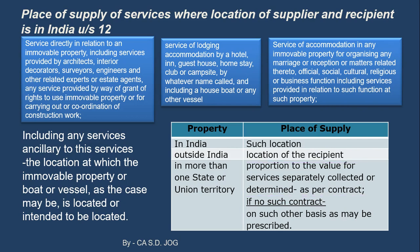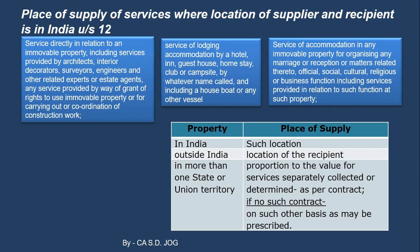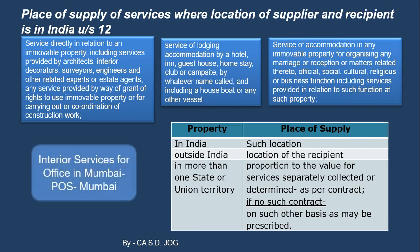Example one: Interior services are provided for offices in Mumbai. One person is providing interior services and the office is situated in Mumbai. This falls in the first category — immovable property — so wherever the immovable property is located, that will be the place of supply of services. Therefore, the place of supply of services will be Mumbai.